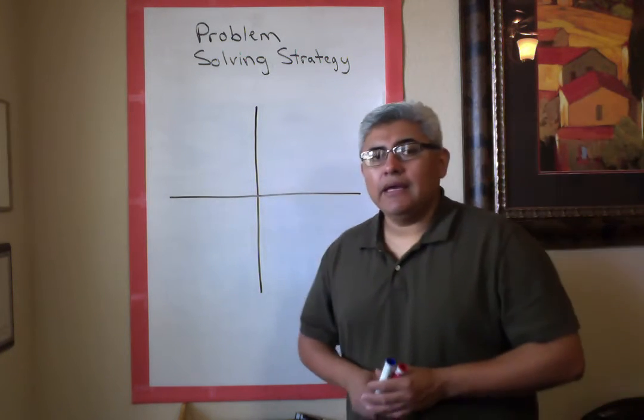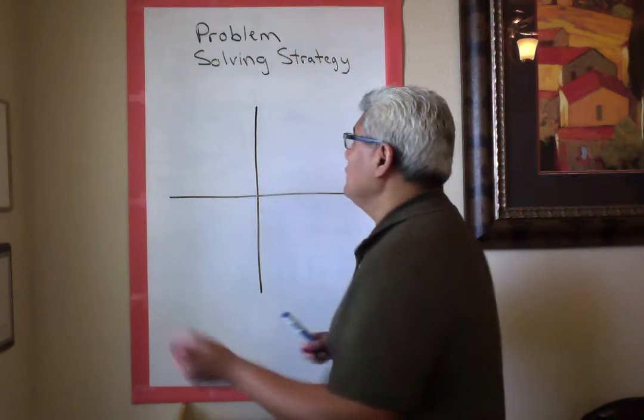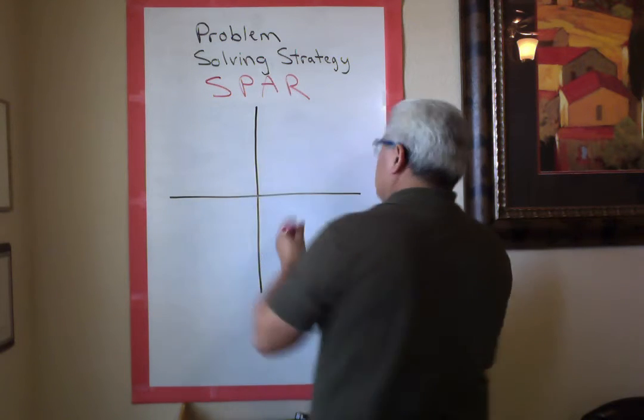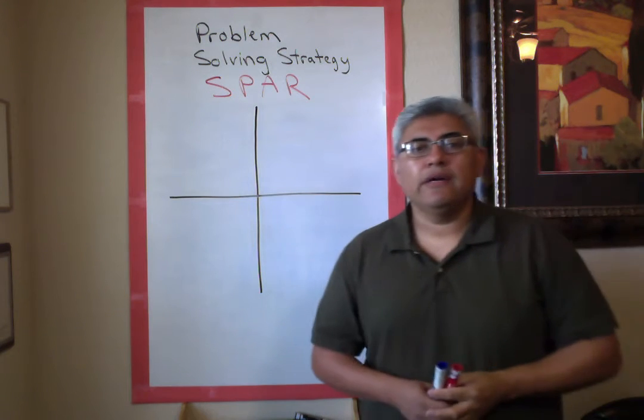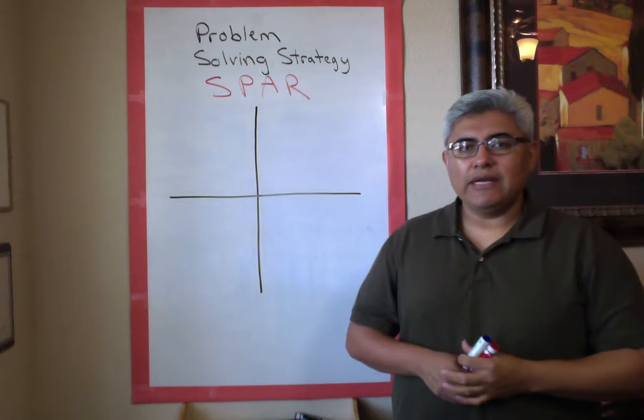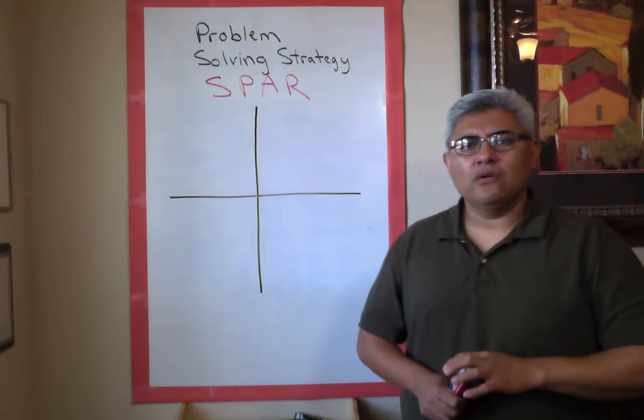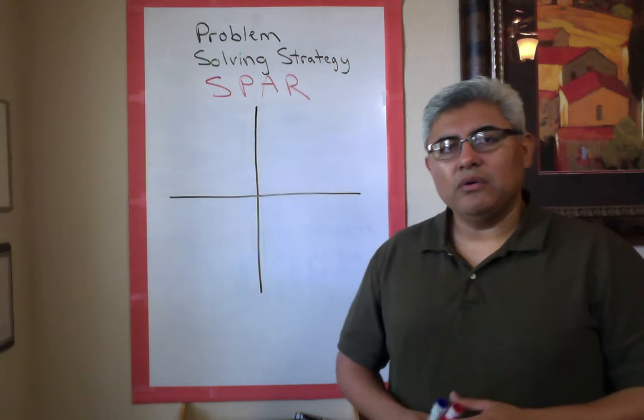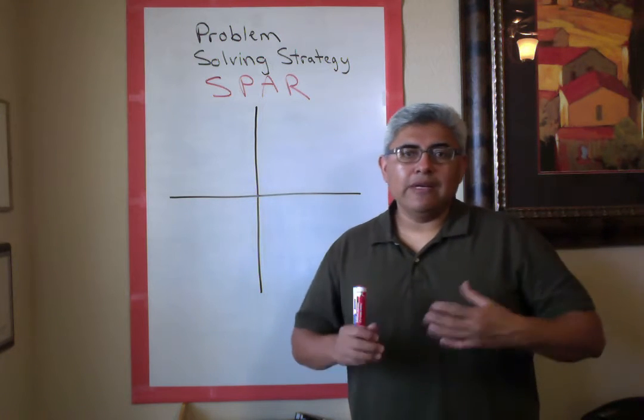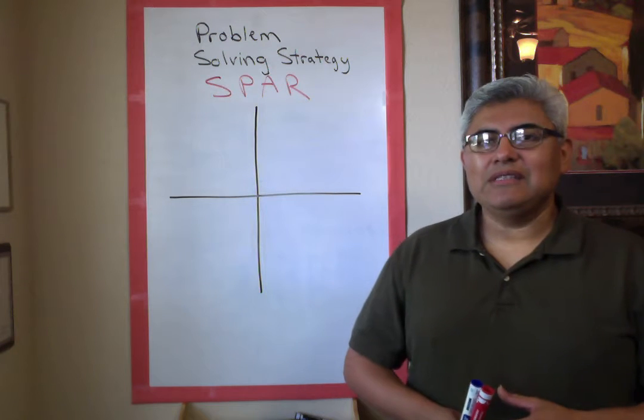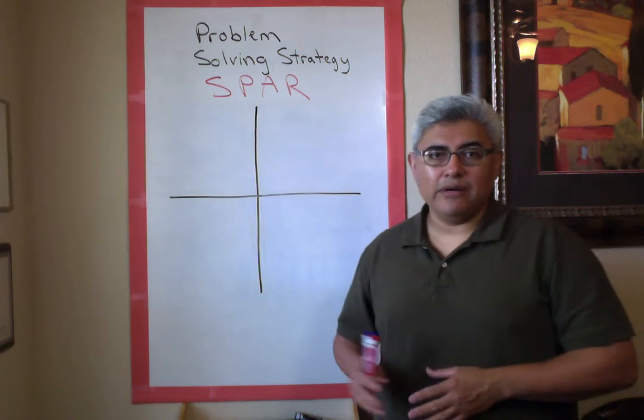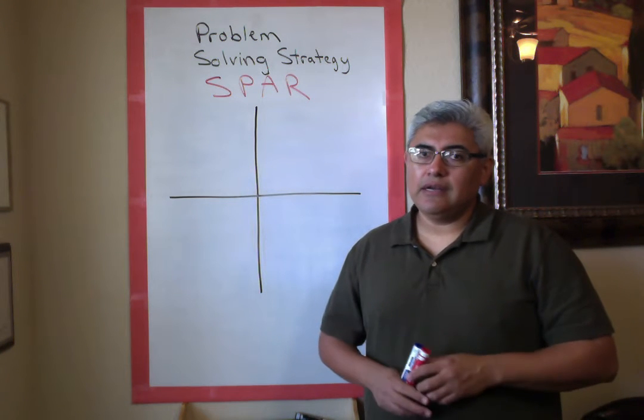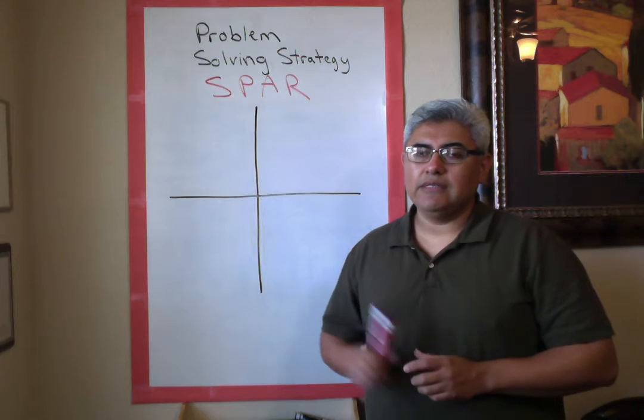Today we're going to be studying our problem-solving strategy called SPAR. SPAR is what you do when you're practicing karate or boxing, trying to knock down your opponent. We're not going to be knocking down anybody - our opponents are going to be our math problems. We're going to study our math problems and try to knock them down using our problem-solving strategy, which is SPAR.